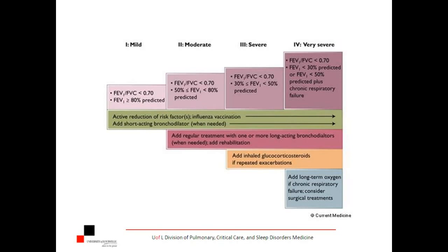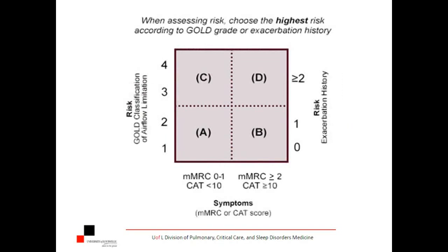Between 2007 and 2013, papers started coming out really looking at this harder. It's great to look at the different spirometric stages, but we also might have good information from symptoms and numbers of exacerbations. What if we put all these things together into a new paradigm? So here's the paradigm we came up with. The Modified Medical Research Council score and the COPD Assessment Test — if the score is low, it puts you in the lower category; if MRC is 2 or more and CAT is 10 or more, you go into the higher symptom category.